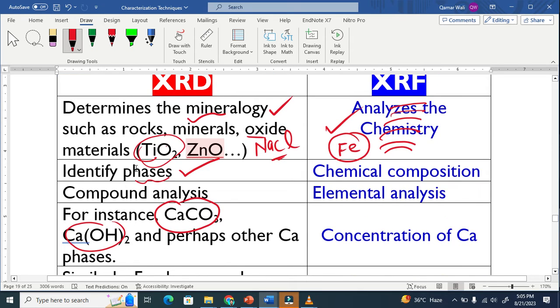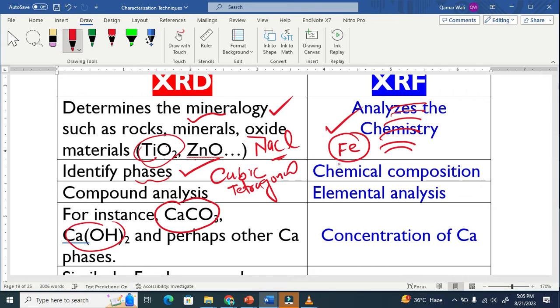For example, cube is one phase of titania and tetragonal is another phase of titania. This means phase here. Tetragonal is another phase, while XRF basically gives the chemical compositions.